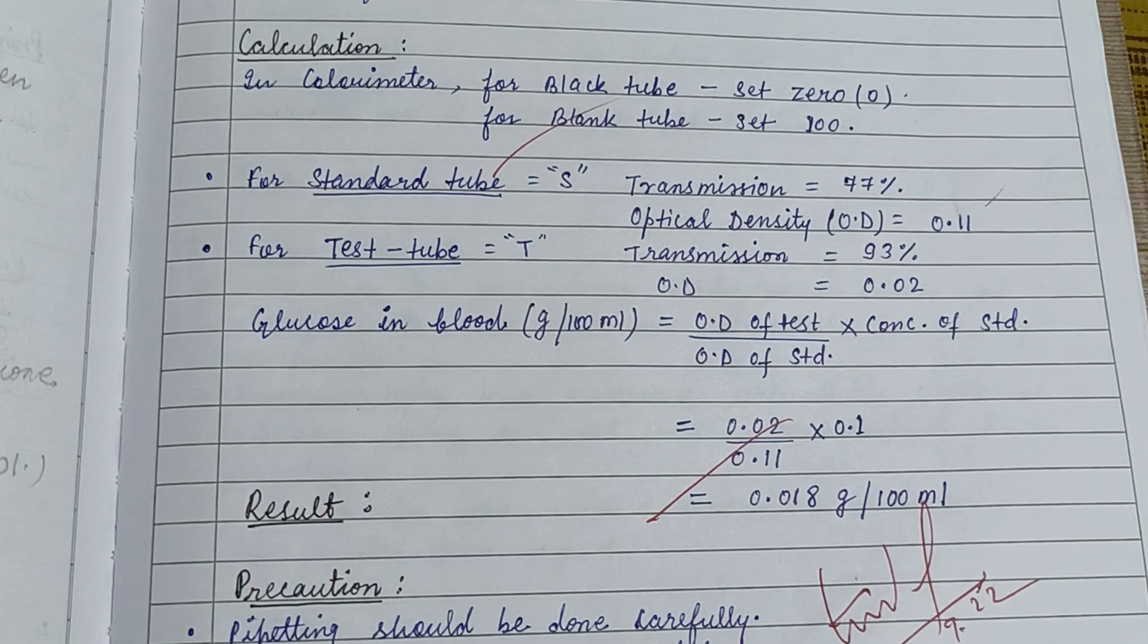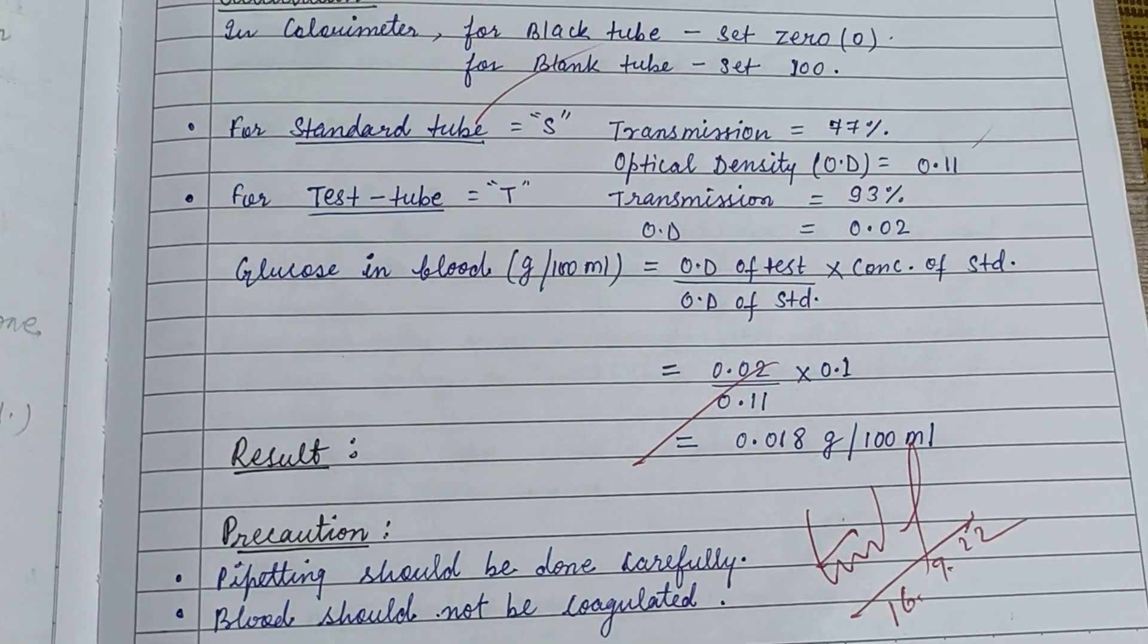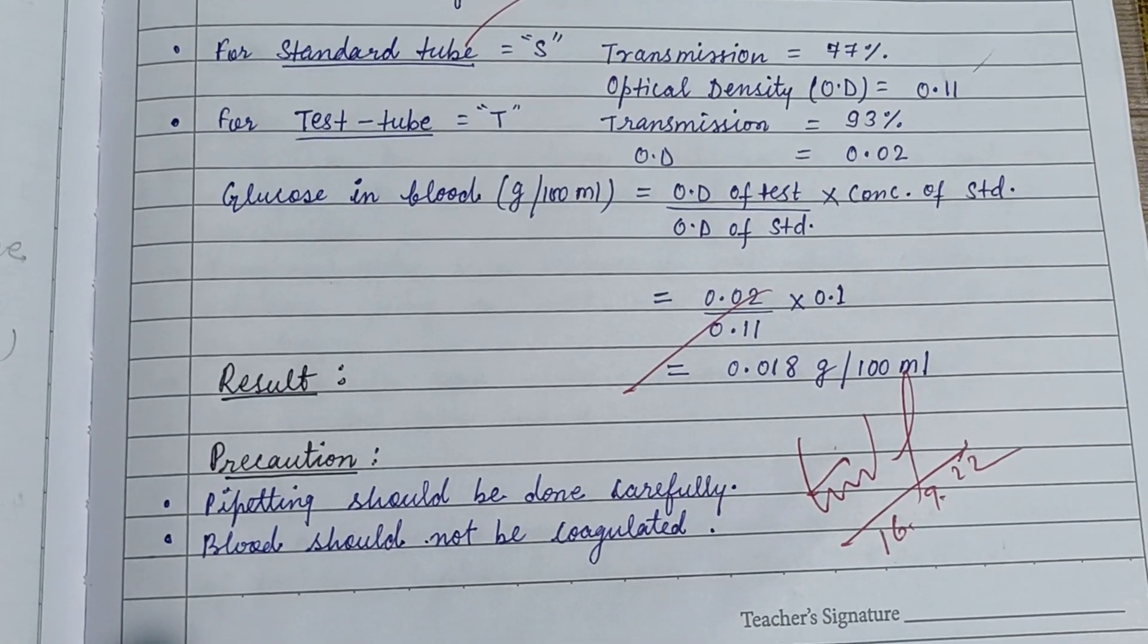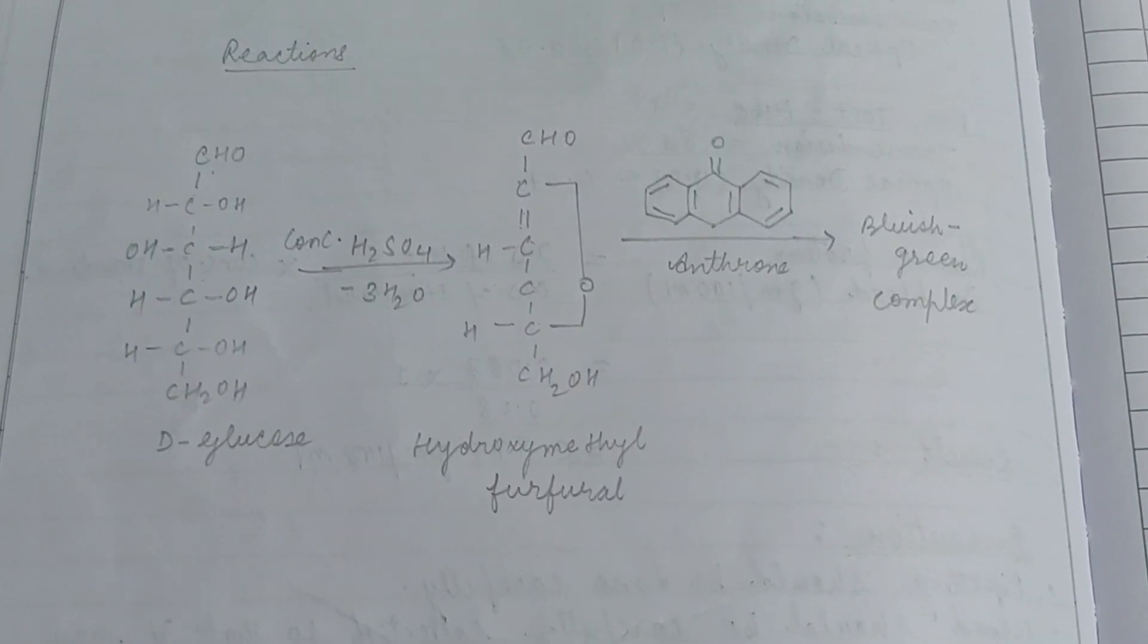Procedure: The test tubes are taken and named as T for test, S for standard, and B for blank. In the colorimetry, the blank tube is inserted first, then the standard tube, and then the test tube is added.